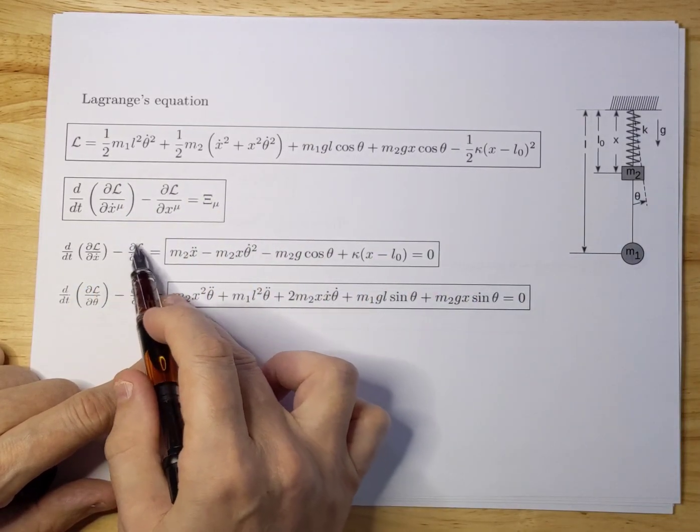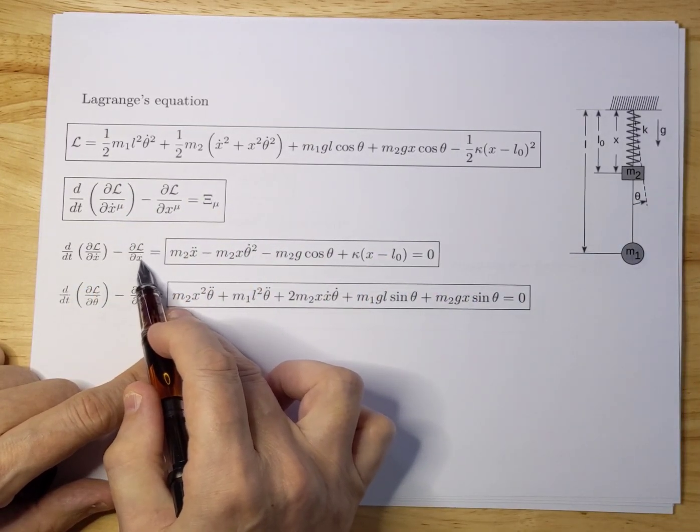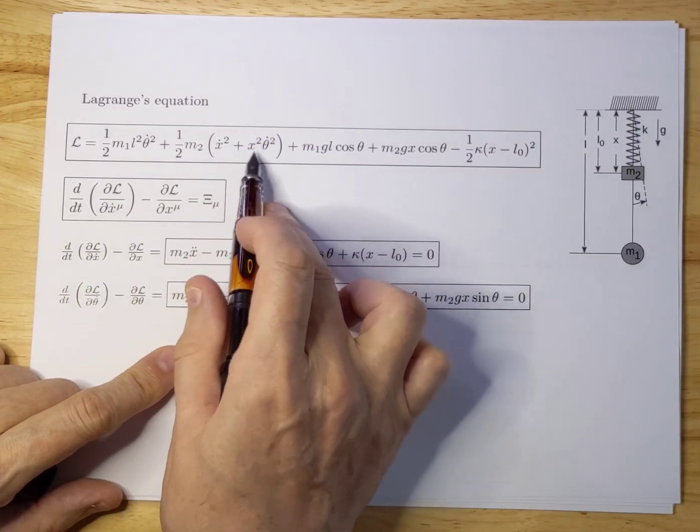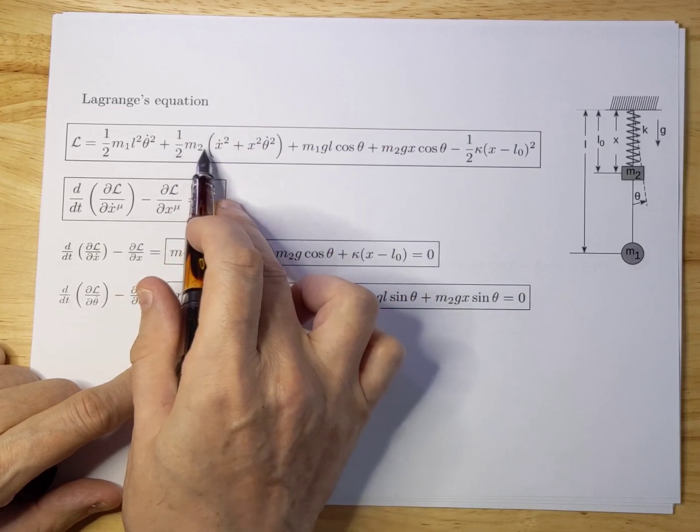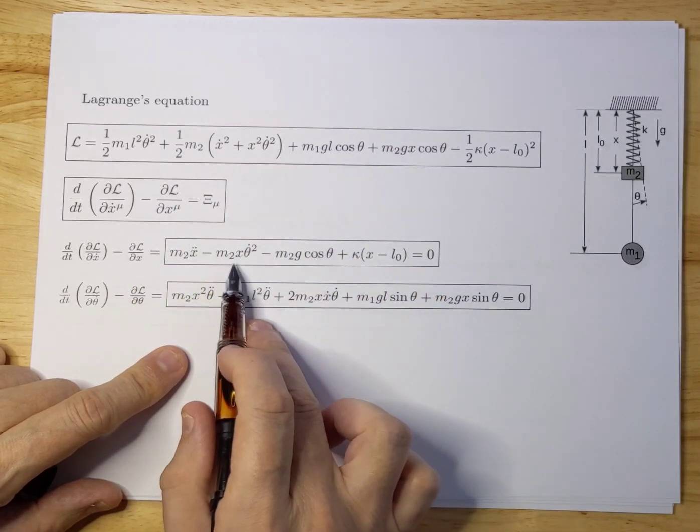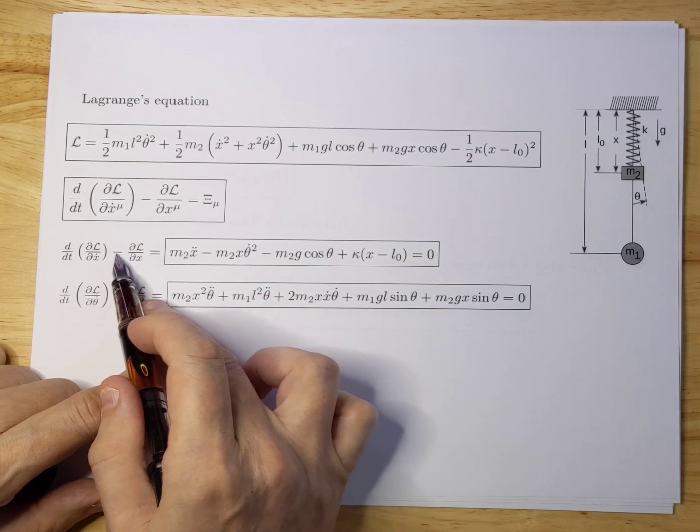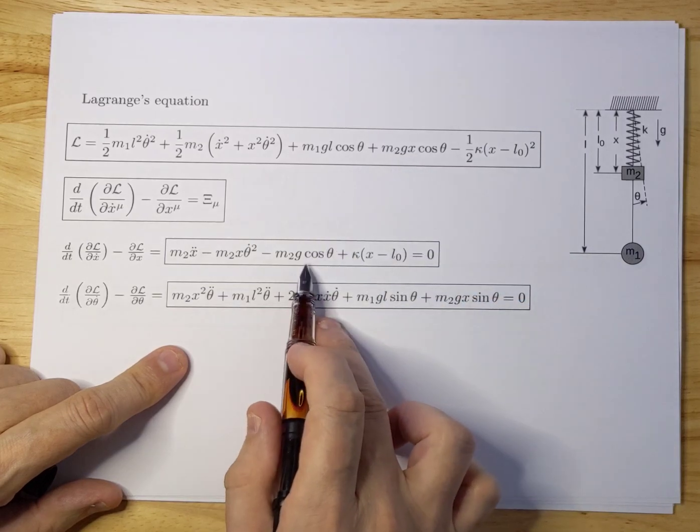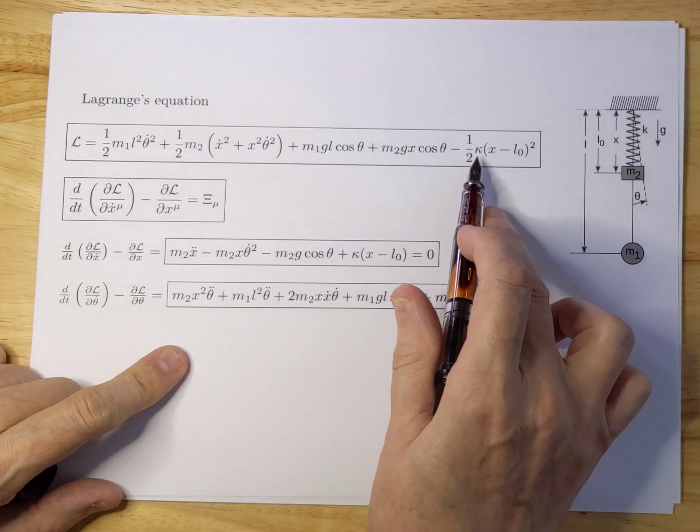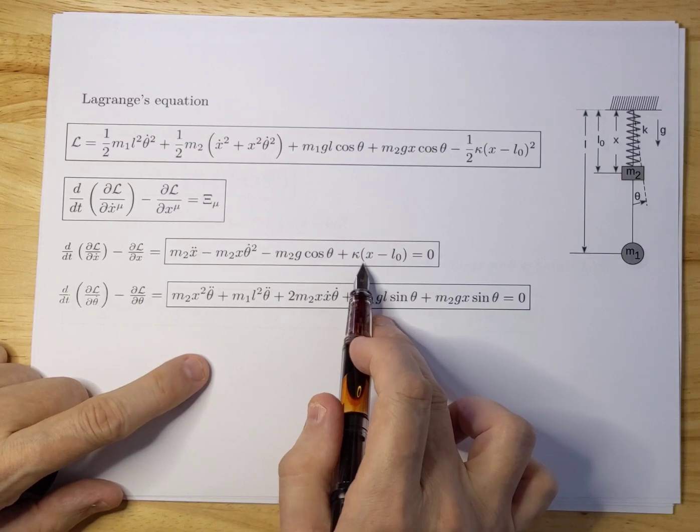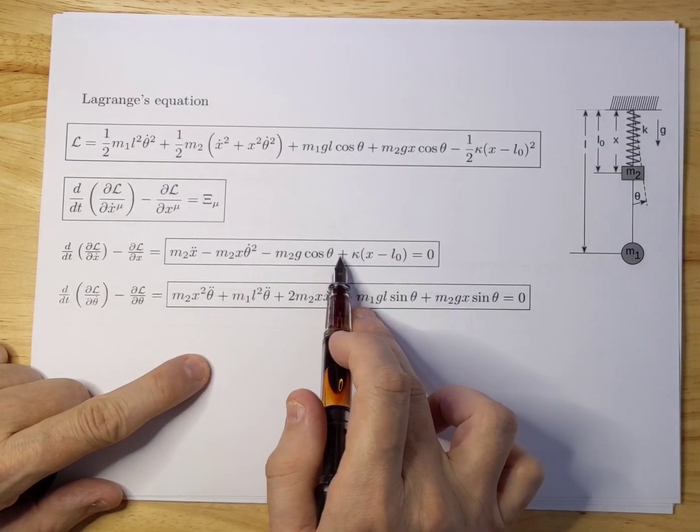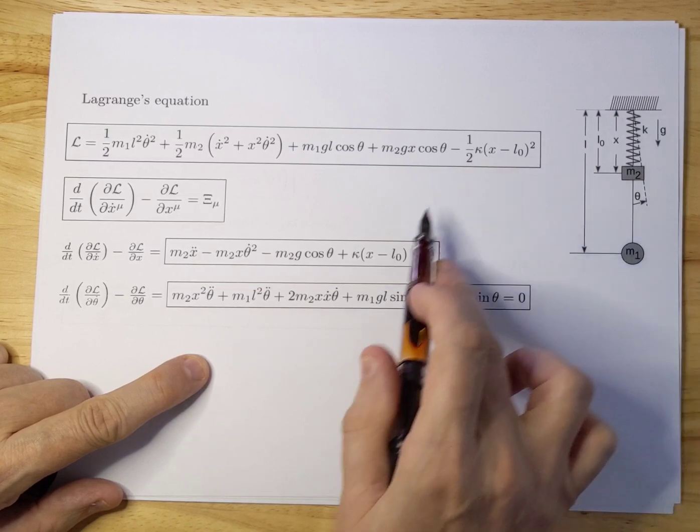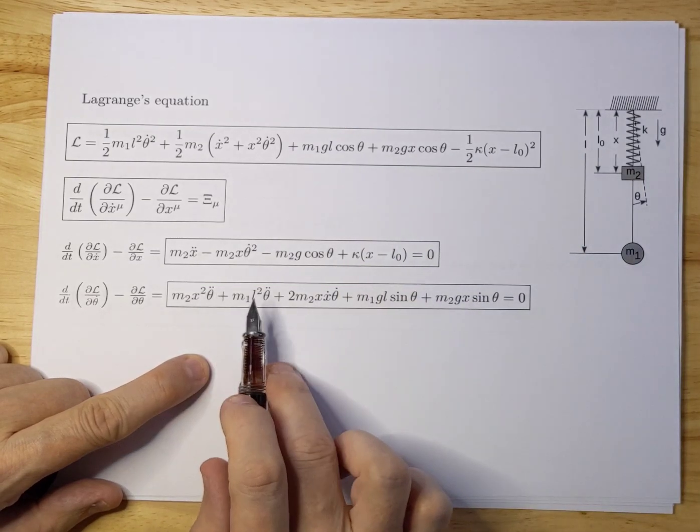Now we move on with differentiation with respect to X of the Lagrangian. There's a term here, so if you differentiate this with respect to X you get M2 X theta dot squared, that's this one with the minus from here. If you take this term and differentiate it with respect to X you get this term, also with a minus. If you differentiate this one you get this term. There's a minus, there's a minus there, so you get a plus and you get 2K X minus L0.